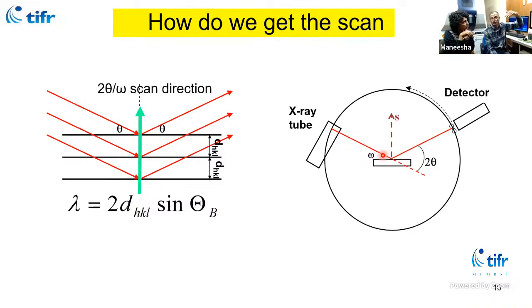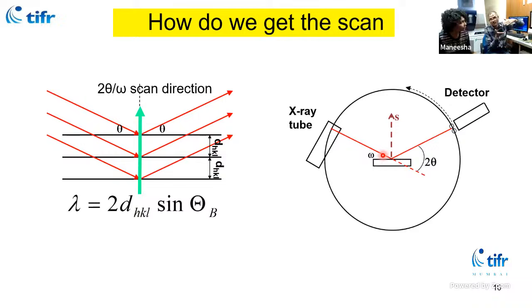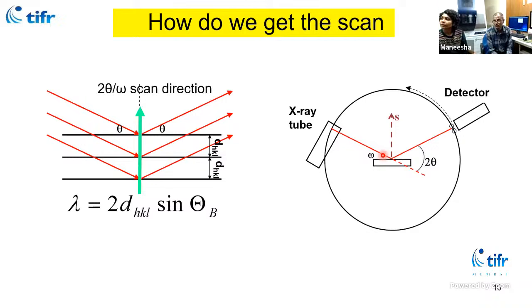X-ray can penetrate up to 10 microns thickness — only the top 10 microns part is seen. This is called the penetration depth of X-ray. Regarding standards, the manufacturer provides a silicon 111 standard — you load it and check that peak positions appear at the proper 2-theta and intensity is correct. There is also a question about determining molecular structure using X-rays, which involves Rietveld analysis and is more of a statistical approach.